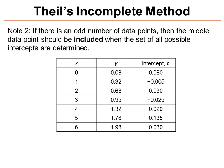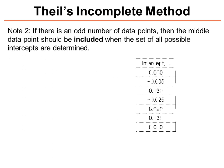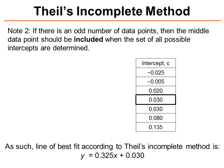So here are all the different data points for this example, and if we just reorder these now from the smallest to the largest, we can see that the median value is 0.030. Overall, the line of best fit for this example is y equals 0.325x plus 0.030, according to Theil's incomplete method.